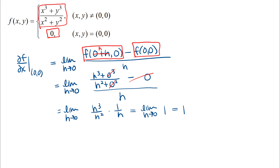So that tells me that the partial derivative of this function at x = 0, y = 0 is 1. We'll do the same thing for the partial derivative with respect to y. You might expect that because this function has a lot of symmetry in the algebra with respect to x and y, we'll get a similar kind of result.